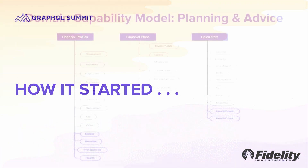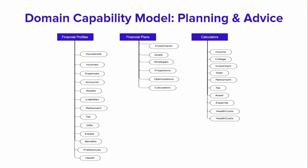So how did it all begin? Data at Fidelity is organized into domain capabilities that help define key terms, entities, their purpose, and the relationship with other entities. This domain model aims to provide a stable reference with proper scope to enable cross-team and cross-initiative communication. Here's a quick visual of what the domains look like in the planning and advice capabilities, and we have many such capabilities and domains at Fidelity.